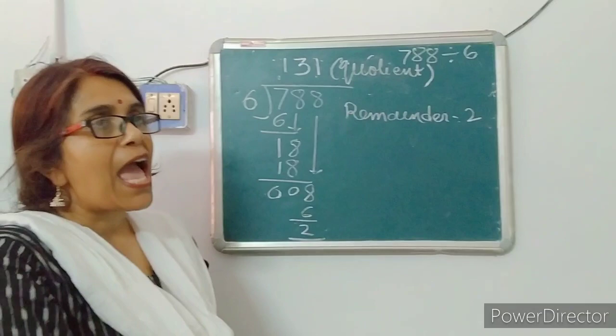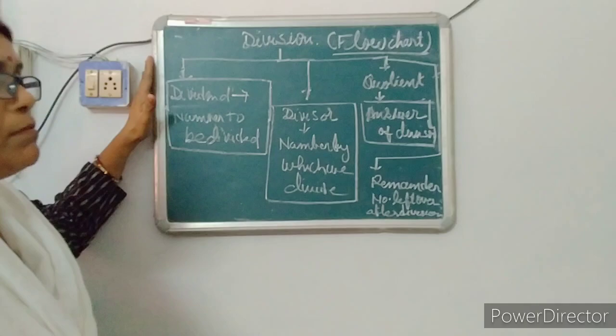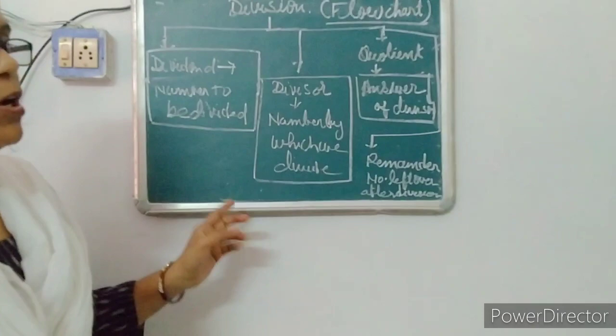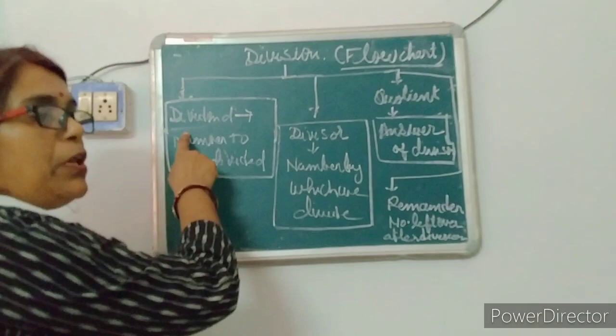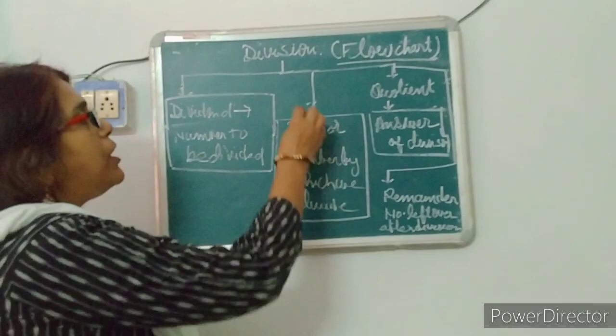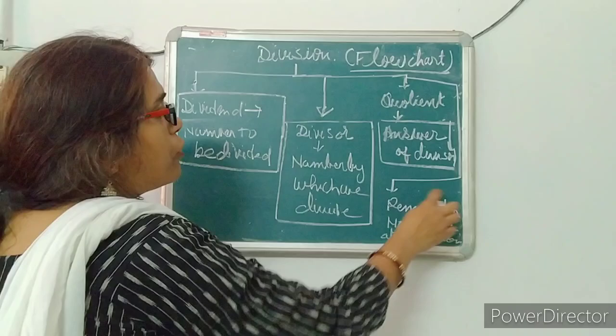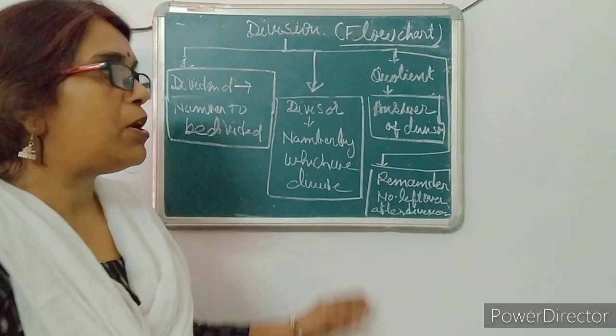First of all, take out the copy and write down the heading. Dear children, this is the flowchart of division. The terms which are used in division — draw this flowchart in the classwork copy. In division: first term is dividend, which means the number to be divided. Second term is divisor, which means the number by which we divide. Third, the answer of division is called quotient. And fourth term is remainder, which means the number left over after division.